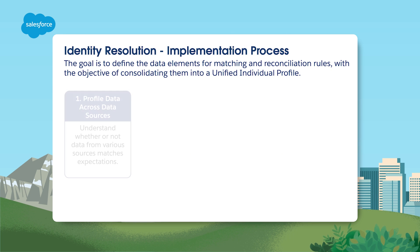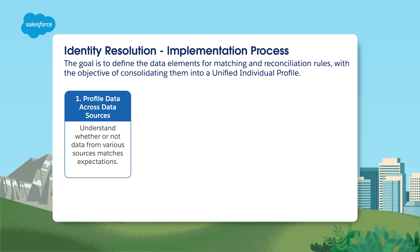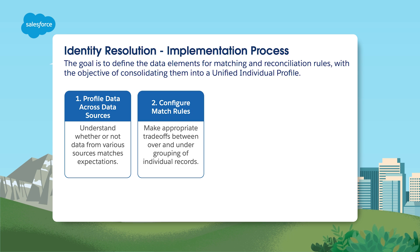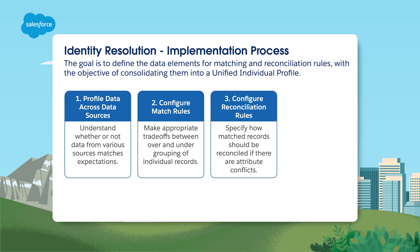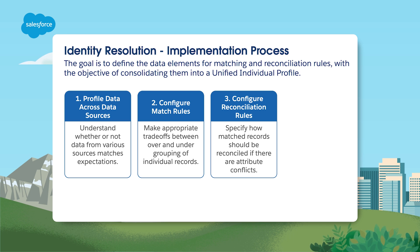First, you need to understand your data and what data points each data source includes. Next, configure your matching rules to define the criteria that link individual records from those different data sources. Then set up the reconciliation rules to choose what data will be selected when data sources conflict. Reconciliation rules specify how to select the best value for saving to the unified profile in the event of conflicts. However, they don't apply to contact points such as email or phone numbers, which will still remain part of the unified profile and are accessible for creating activations for segments.